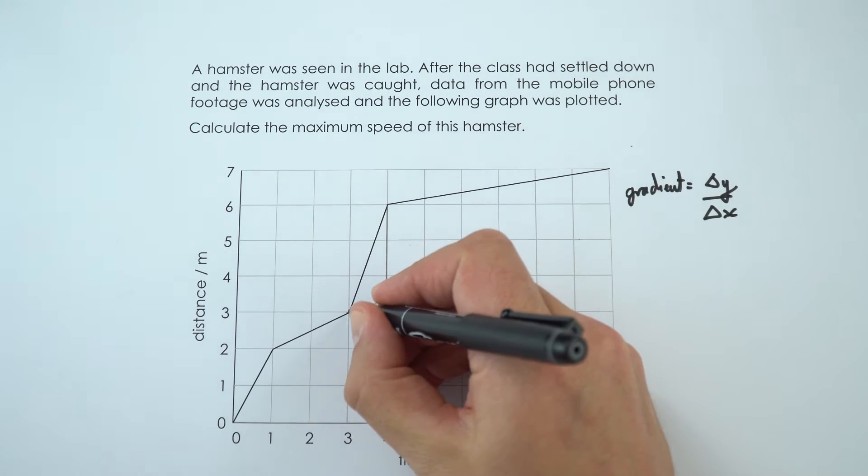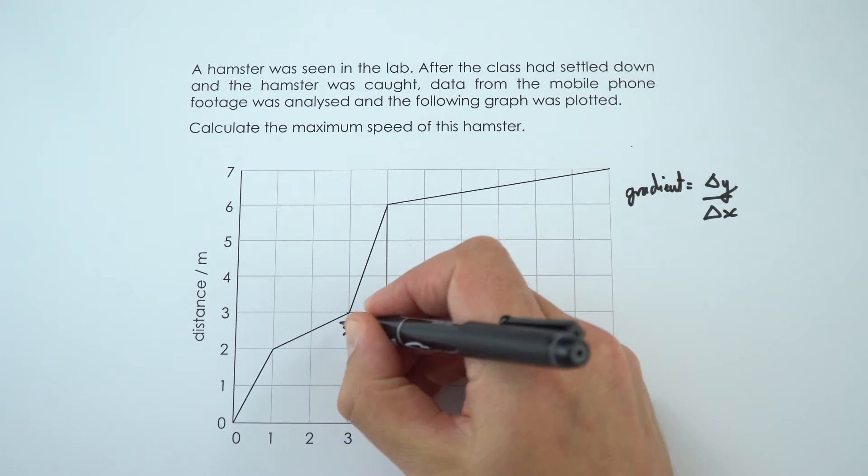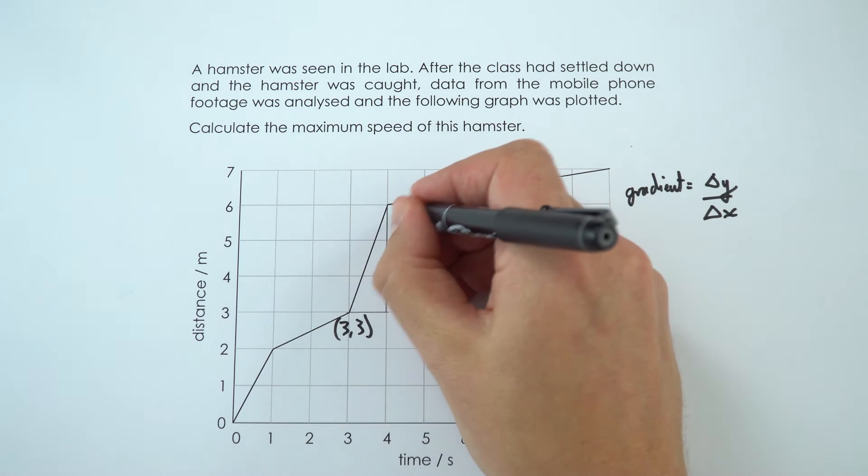And I'm then going to put in my coordinates. So this point here is 3, 3, and this point up here is equal to 4, 6. So that's my x and y coordinates.